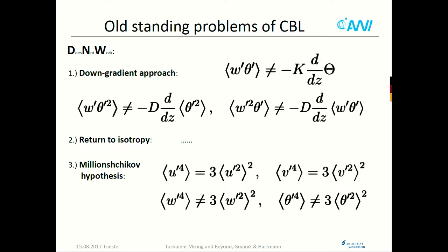Now, the outstanding questions. I must stress I will talk only about one-dimensional decay; if questions arise about multidimensional features I will just comment. What does not work? There is no down-gradient heat transport, no down-gradient transport for higher moments. Return to isotropy also does not work as in homogeneous turbulence. And finally, the famous Millionshikov hypothesis — sometimes called the quasi-normality assumption in the DQNM framework — also does not work.